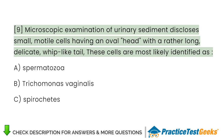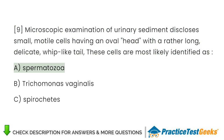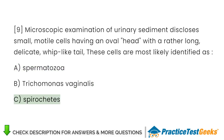Microscopic examination of urinary sediment discloses small, motile cells having an oval head with a rather long, delicate, whip-like tail. These cells are most likely identified as: A. Spermatozoa. B. Trichomonas vaginalis. C. Spirochetes.